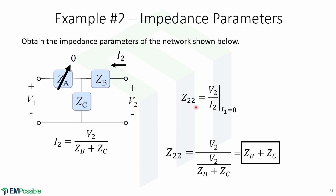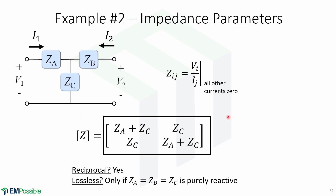For the last parameter, Z22 equals V2 over I2 when I1 equals 0. This means opening port 1 and ZA contributes 0. We write I2 in terms of V2, ZB, and ZZ, which leads to this expression. Substituting into the formula gives us that Z22 equals ZB plus ZZ. Putting all of the elements together, we get the impedance matrix Z.